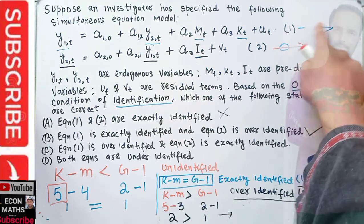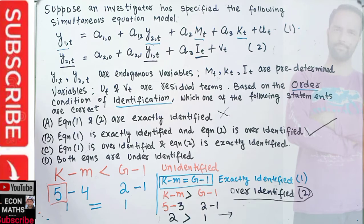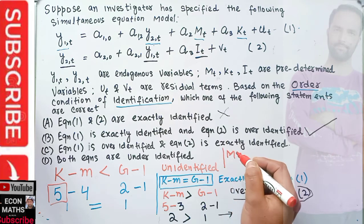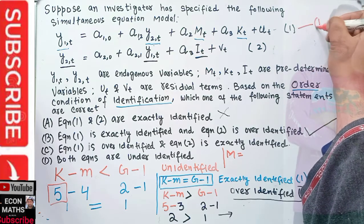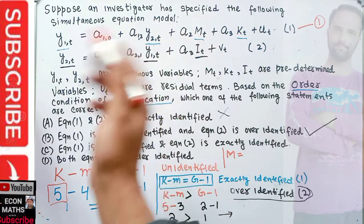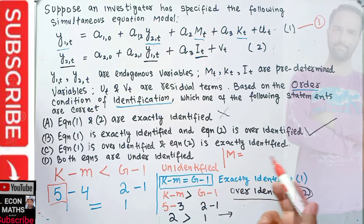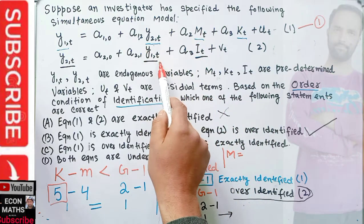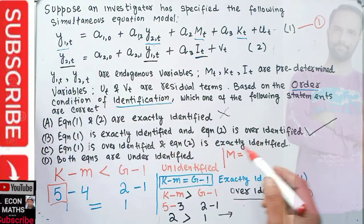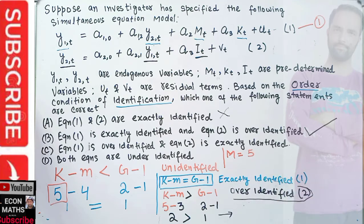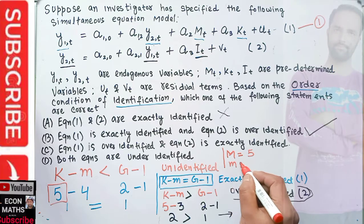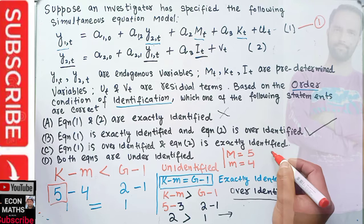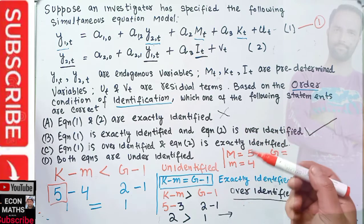To summarize the procedure using the order condition: first, find the total number of variables in the model — endogenous and exogenous — that gives k. Then find m, the number of variables in the particular equation you are testing. Here for equation one, k = 5 and m = 4.